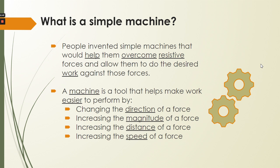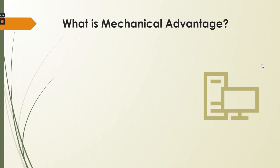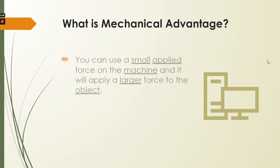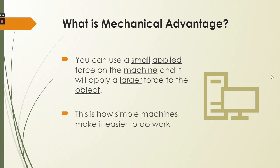So what is mechanical advantage? This is a phrase you'll hear as we go through the different machines. You can use a small applied force on the machine, and it will apply a larger force to the object. Meaning you're not doing as much work — if you are applying less force on that machine, you are doing less work, and it makes it easier for larger things to move. This is how simple machines make it easier to do work: you apply a small force, it applies a large force.